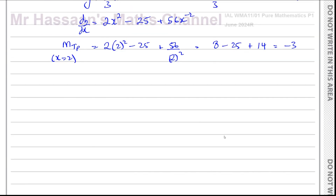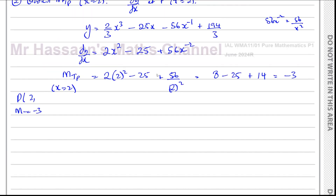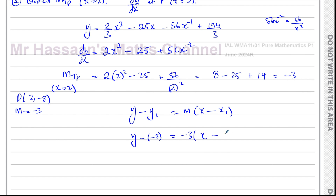Now we know the gradient is negative 3 and point P is (2, negative 8). We can find the equation of the tangent using y minus y1 equals m times x minus x1. So y minus negative 8 equals negative 3 times x minus 2. That gives y plus 8 equals negative 3x plus 6. So y equals negative 3x, and 6 minus 8 is negative 2. Therefore y equals negative 3x minus 2, which is exactly what we had to show.